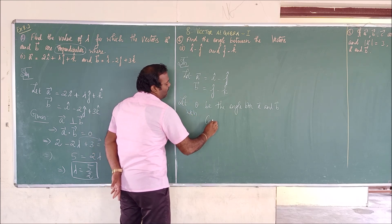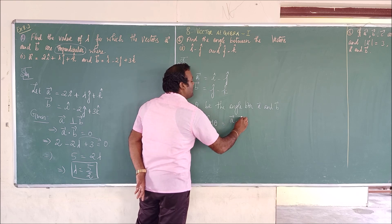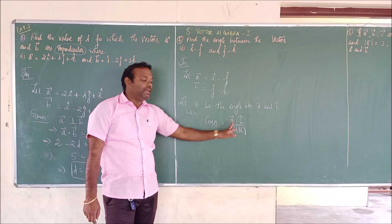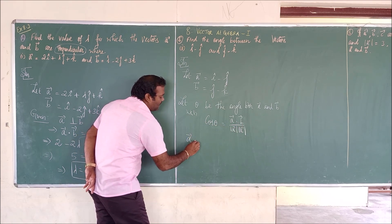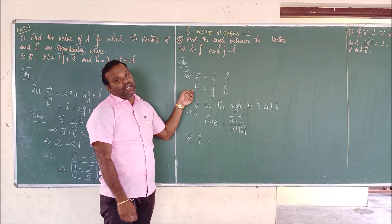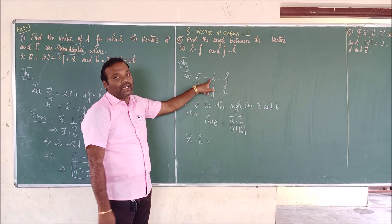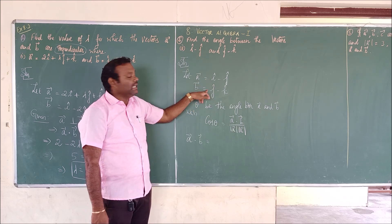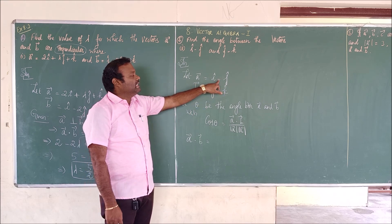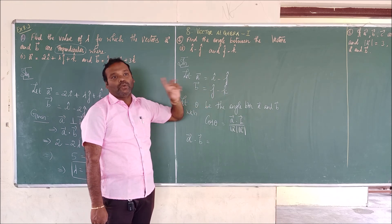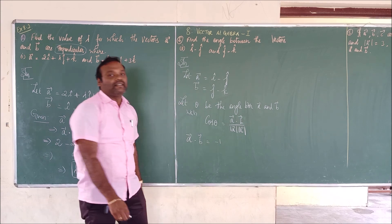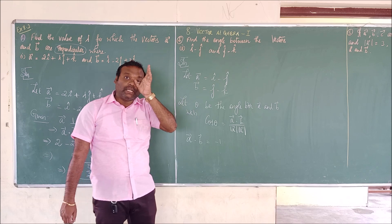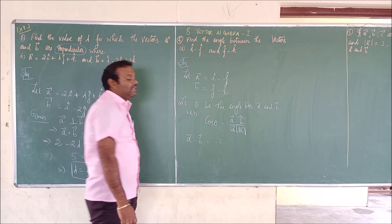We know the formula: cos theta equals a dot b divided by modulus a times modulus b. Now computing a dot b — for the i cap component: a has 1, b has 0 (no i cap term), so 1 into 0 is 0. For j cap: a has minus 1, b has 1, so minus 1 into 1 is minus 1. For k cap: a has 0 (no k cap), b has minus 1, so 0 into minus 1 is 0. Therefore a dot b equals minus 1.